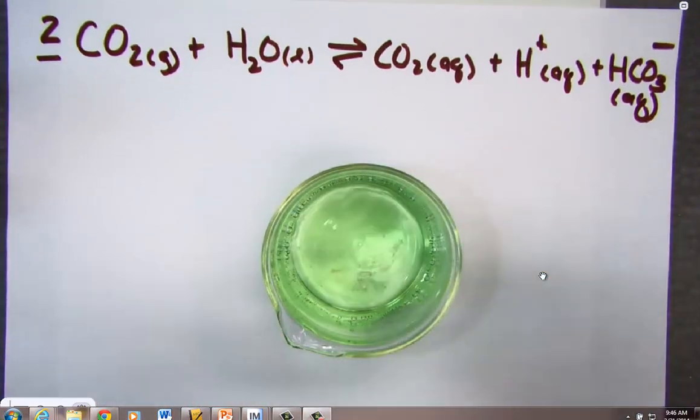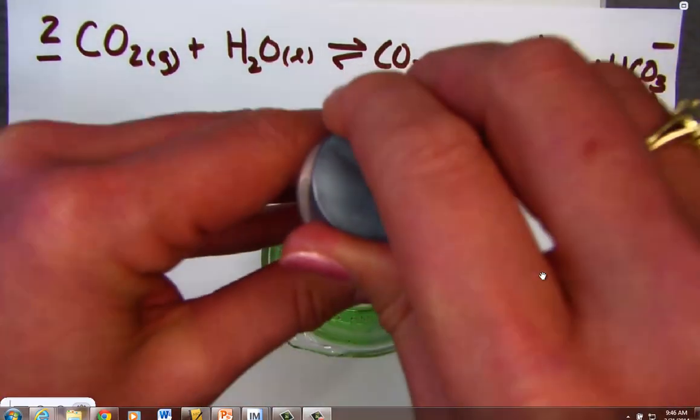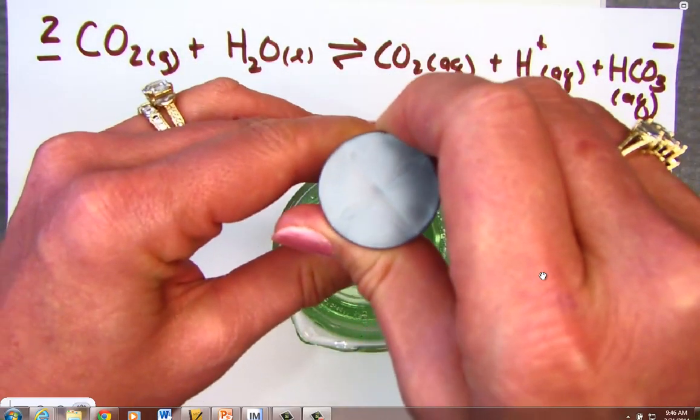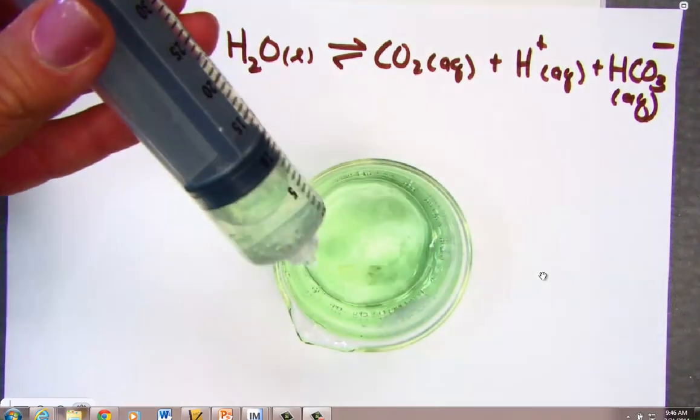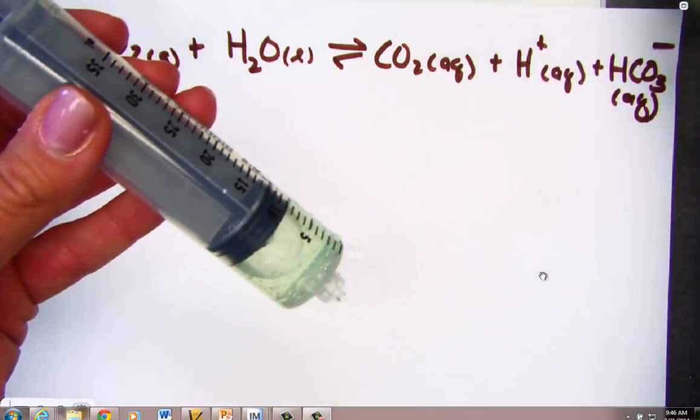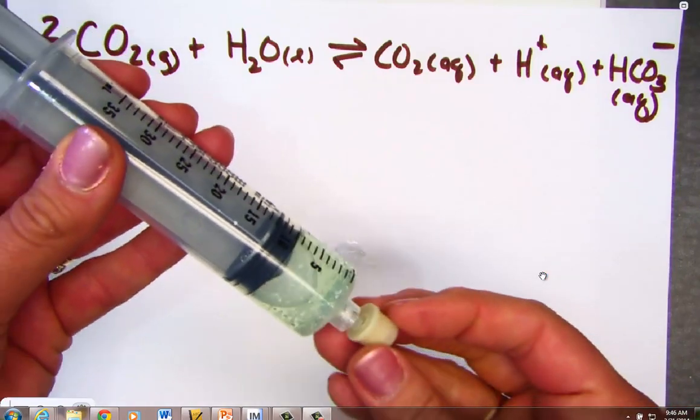I'm going to draw up some of my seltzer water into a syringe, approximately 10 mils, the volume isn't critical. So I have drawn some up into a syringe, and I will now remove the beaker, and I'm going to cap the syringe.